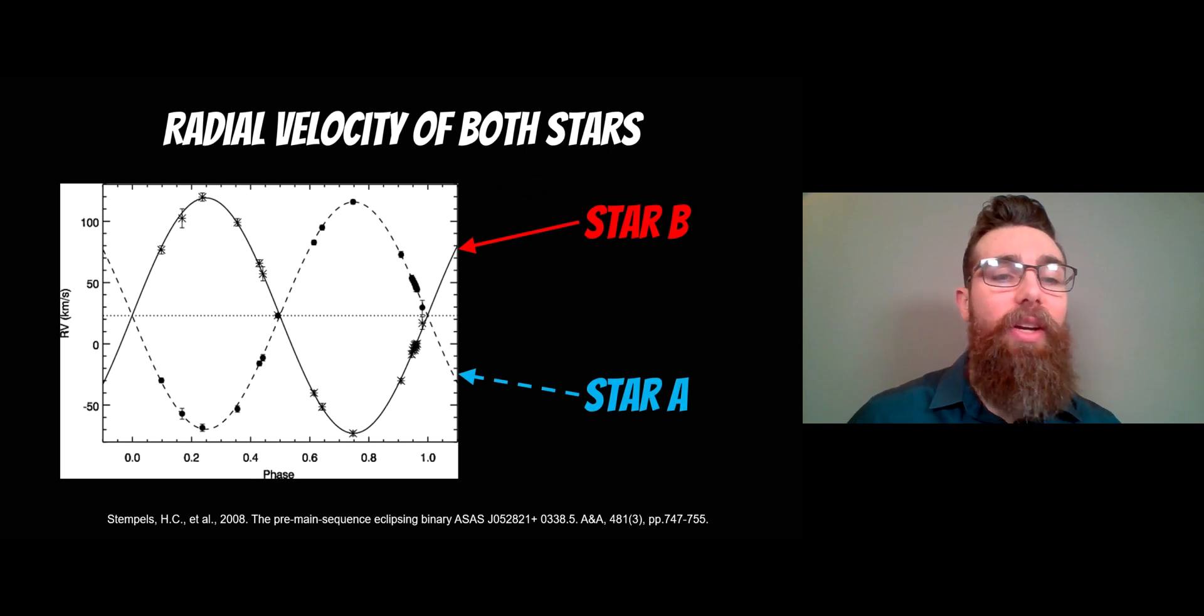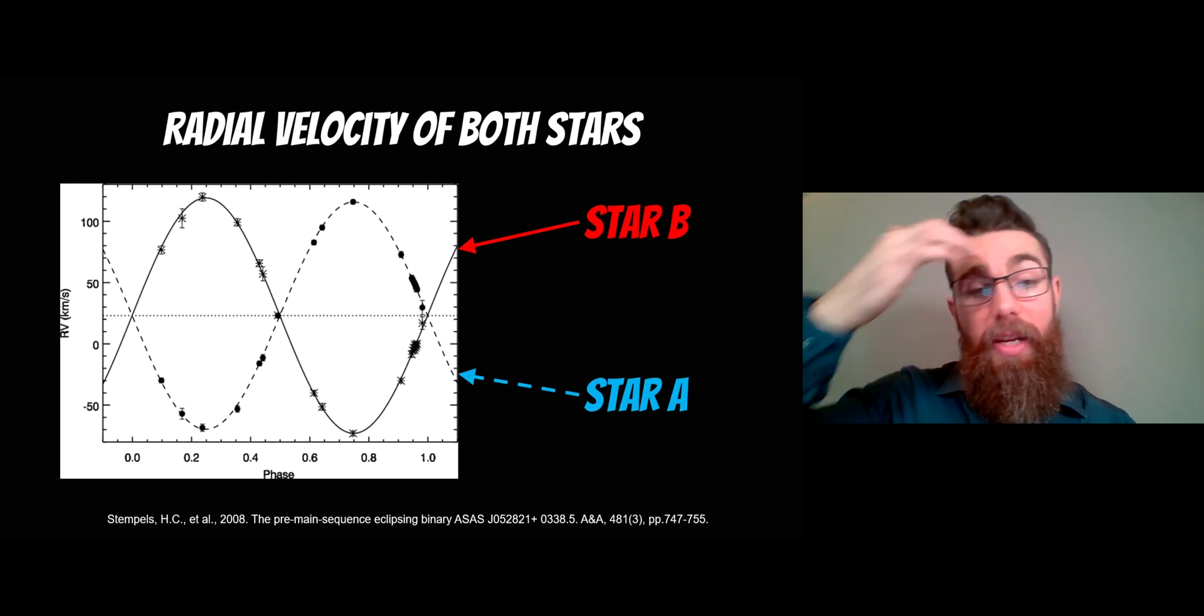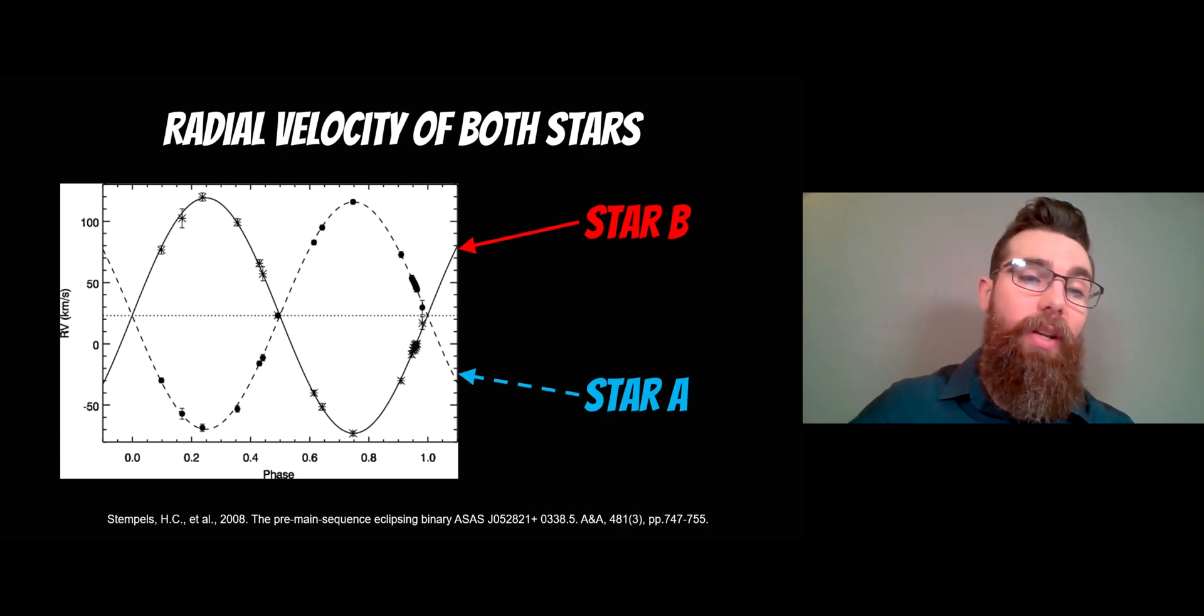When you do that you'll get a radial velocity plot like this. This is for star A and star B, and you can see that their velocity from our point of view oscillates throughout one orbital period. When it's traveling towards us obviously it's going to get its largest velocity, which is the peak of this, and it's traveling away and then we get the complete opposite. If the orbits are circular then you get this nice sine wave looking sort of plot.